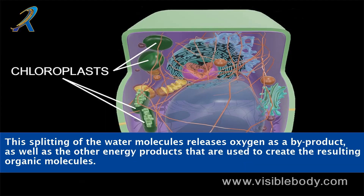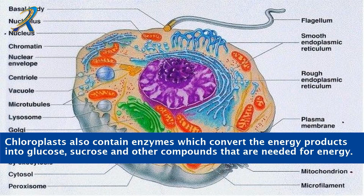This splitting of the water molecules releases oxygen as a byproduct, as well as other energy products that are used to create the resulting organic molecules. Chloroplasts also contain enzymes which convert the energy products into glucose, sucrose, and other compounds that are needed for energy.